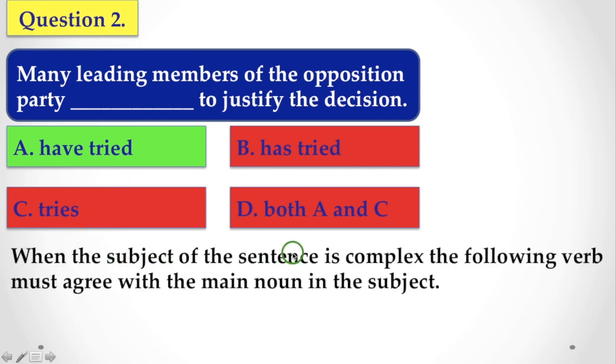When the subject of the sentence is complex, the following verb must agree with the main noun in the subject. So if we see this sentence, which one is the main noun? Yes, members. This is the main noun. And this noun is plural in numbers. So you have to choose a plural verb. In that case, have tried is the correct answer.